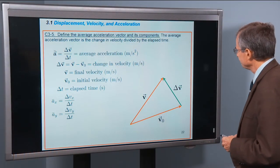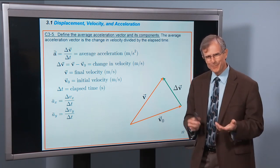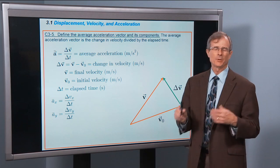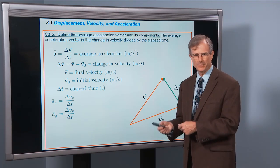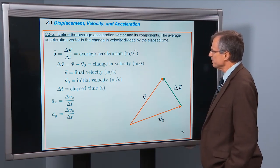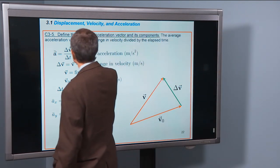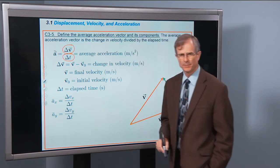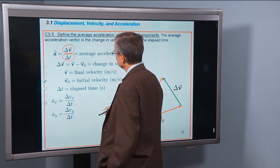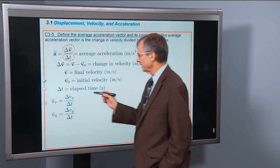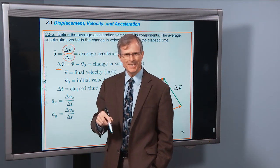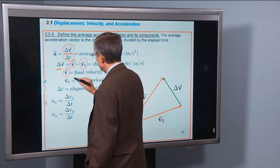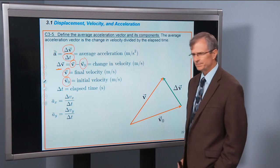So let's actually define the acceleration. We're going to do the average acceleration, and then the instantaneous acceleration — taking the limit as elapsed time goes to zero, just like we did with velocity. The average acceleration vector is the change in velocity divided by the elapsed time. Delta, as always, means final minus initial. So this means the final velocity v minus the initial velocity v₀.